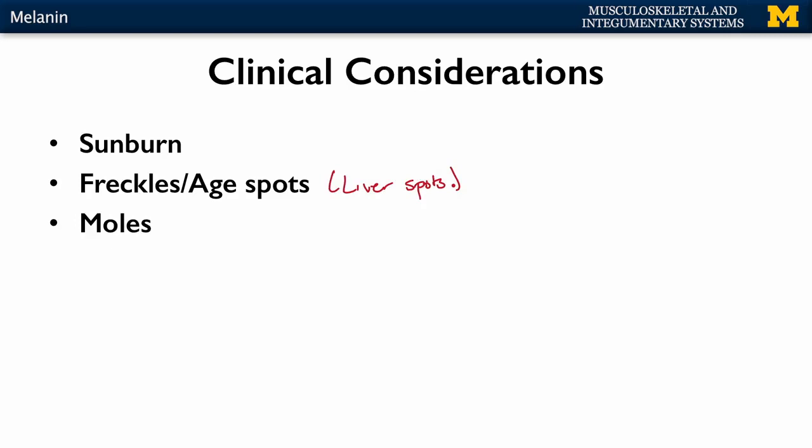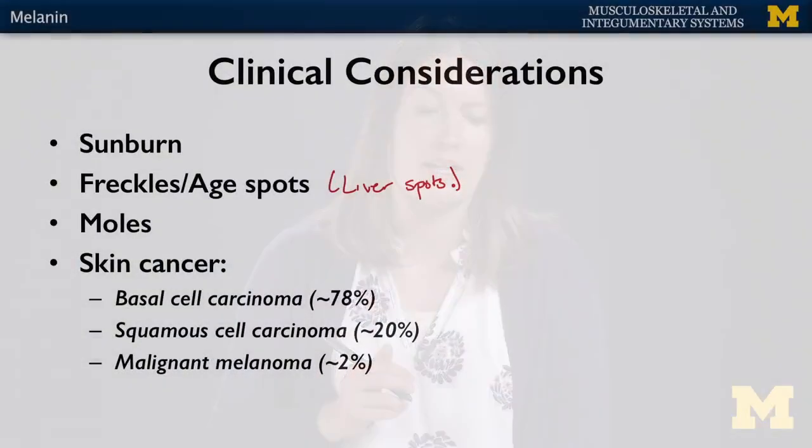Different from freckles, you're going to have moles. Moles are typically benign accumulations of melanocytes. They are typically raised and often darker, but not necessarily so. They can be associated with skin cancer. Individuals with moles need to keep a closer eye on them because their incidence of specific types of skin cancer is a little higher.